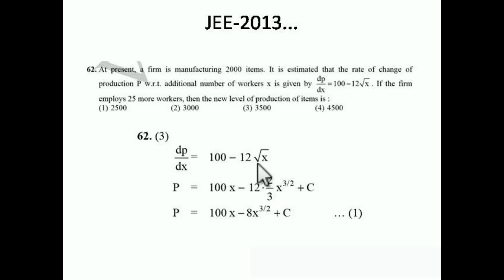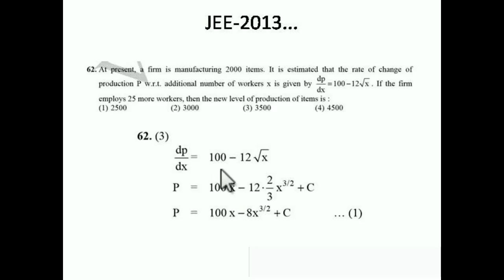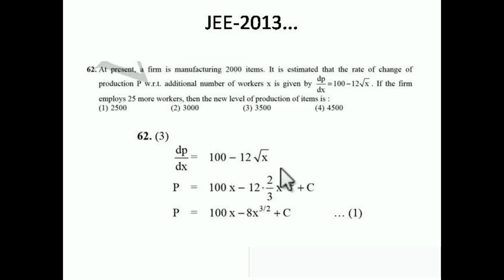So dp/dx = 100 − √x is given to us. We need to find a relationship between p and x. Just integrate both sides with respect to dx. We get p = 100x − 12 · x^(1/2) integrated, which gives x^(3/2) divided by (3/2), so that simplifies to 100x − 8x^(3/2) plus constant c.